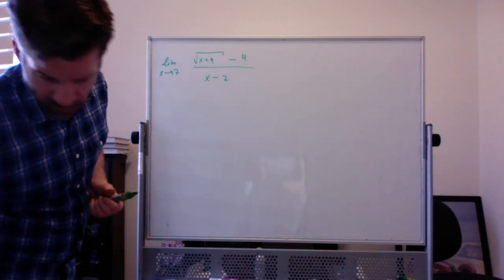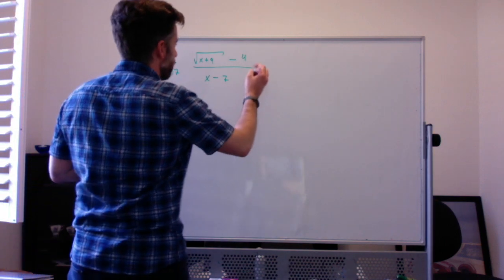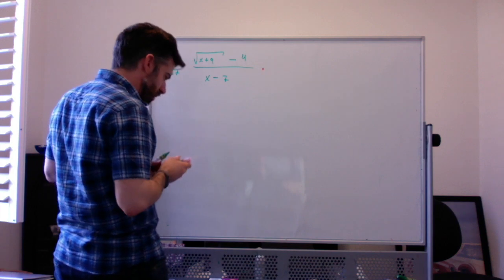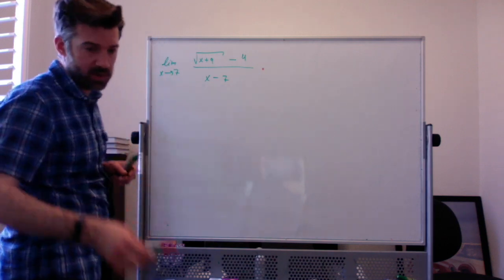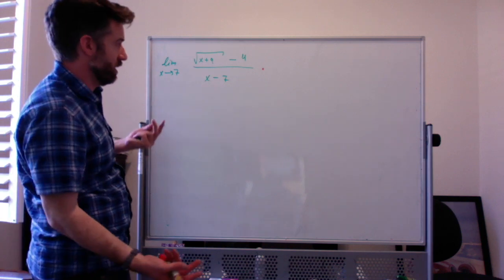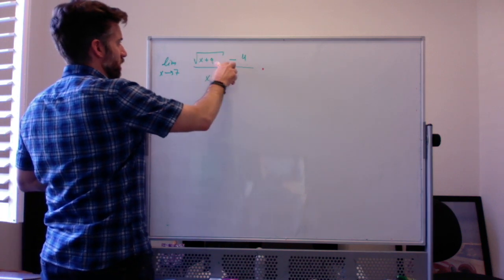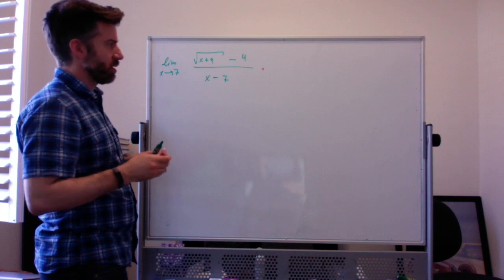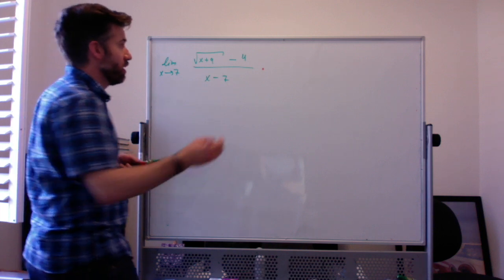We're going to multiply by the conjugate. The conjugate can be a little bit misleading — the conjugate of x minus 7 is x plus 7; the conjugate of this minus this is this plus this. Specifically, when you multiply by the conjugate, you usually multiply by the conjugate of the square root part.